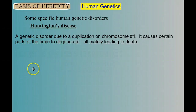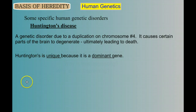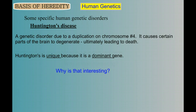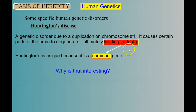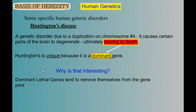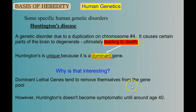Huntington's disease is unique because it's caused by a dominant gene. Dominant genes don't have to be common — in fact, Huntington's is fairly rare, but it's dominant, which means it's expressed. If a gene is dominant and you have it, it gets expressed, and in this case if it gets expressed, you're going to die. So how do you pass the gene on? Dominant lethal genes tend to remove themselves from the gene pool. But how has Huntington's not eliminated itself? It turns out Huntington's disease does not become symptomatic until around age 40, so you've had a lot of time in your reproductive years to have passed this gene on.